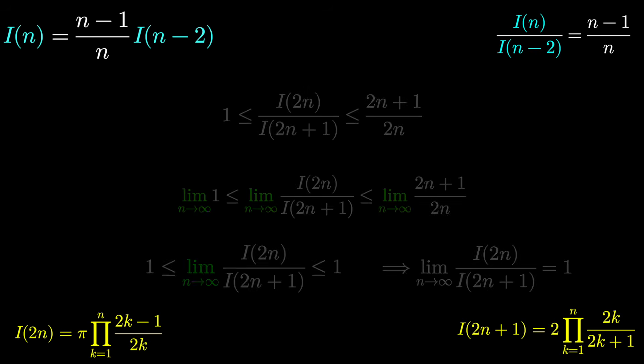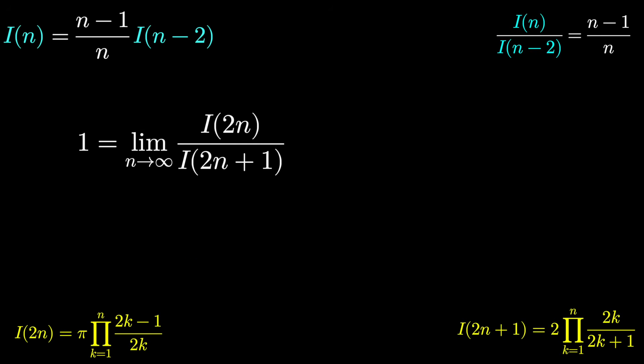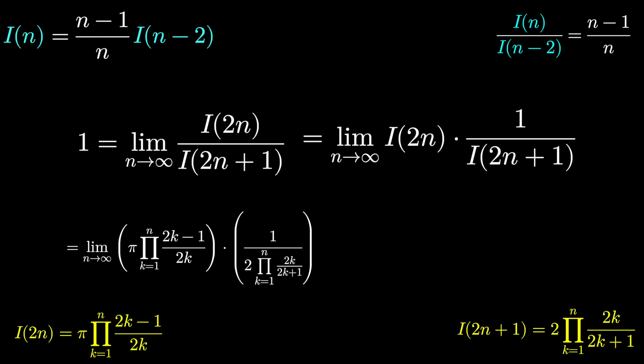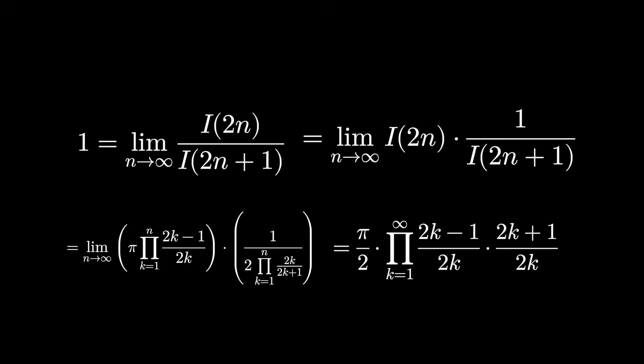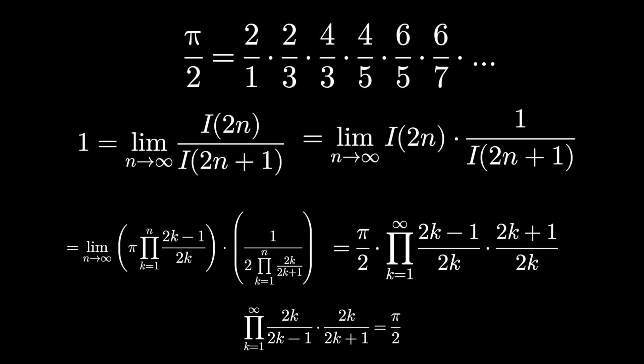Here's the big reveal. This limit is 1. But we also have the formulas now for these two functions, I(2n) and I(2n+1). Those are those product formulas we calculated earlier. And since they're product formulas, we can combine them pretty nicely in one full product. We can take out the pi over 2 and take the limit as n goes to infinity. If you like, you could put the product on the other side just by taking its reciprocal. Which means pi over 2 is this infinite product. Writing out the terms gives us that very interesting result.